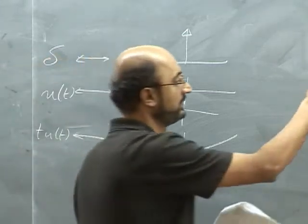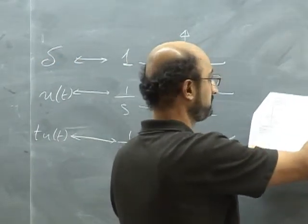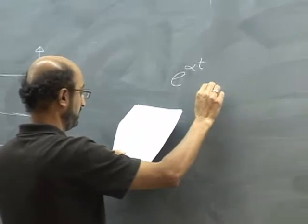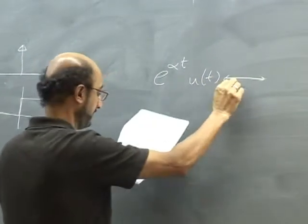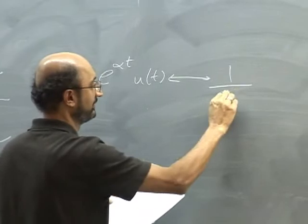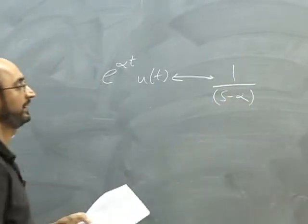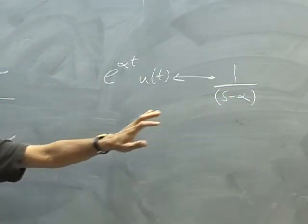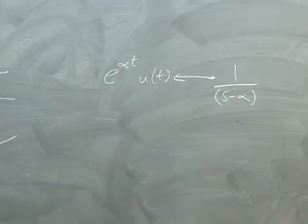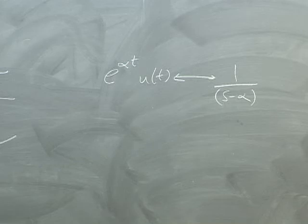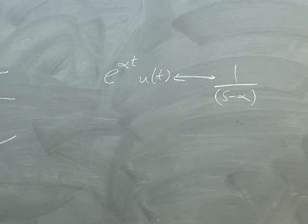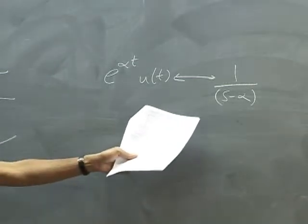The other important one to remember is e^(αt)·u(t), whose Laplace transform is 1 over (s − α). This 1/(s − α) form is very important, because when we have any polynomial and find its roots, the fundamental theorem of algebra says we can take a polynomial and break it up into factors — each factor looks like (s − αₖ).